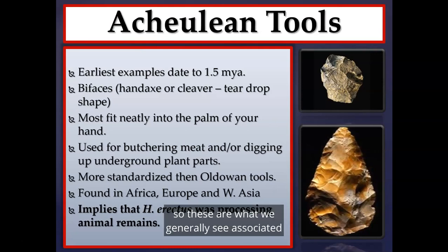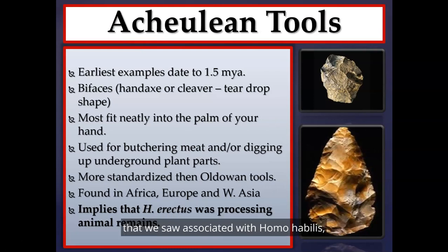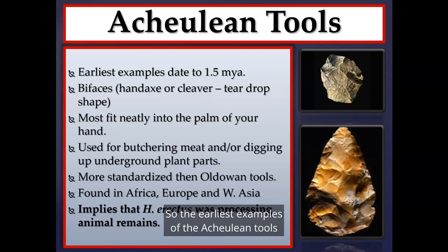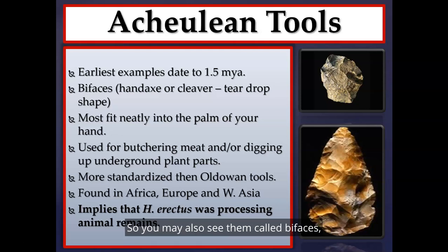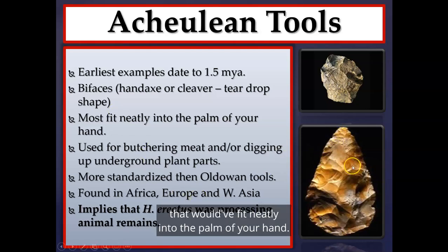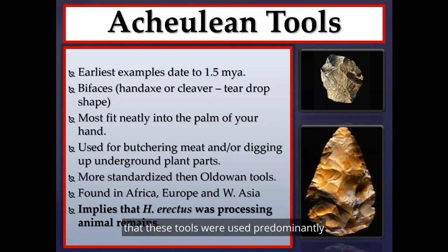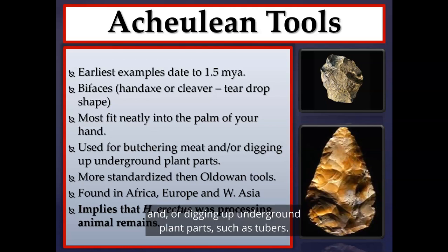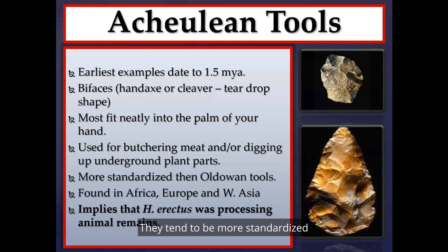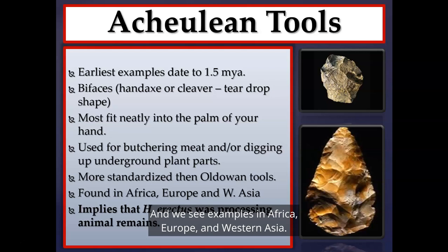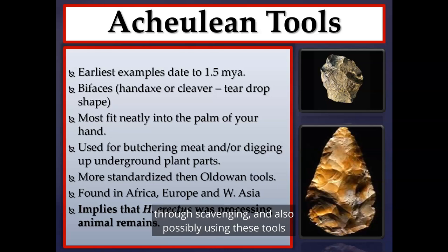The Acheulean tools are what we generally see associated with Homo erectus fossils, as opposed to the Oldowan tools associated with Homo habilis and later Australopithecines like Australopithecus garhi. The earliest Acheulean tools date to about 1.5 million years ago. Also called bifaces, hand axes, or cleavers, they have a teardrop shape fitting neatly into the palm. Hypothesized to be used predominantly for butchering meat and digging up underground plant parts like tubers, they are more standardized in shape and size than Oldowan tools, found across Africa, Europe, and Western Asia.